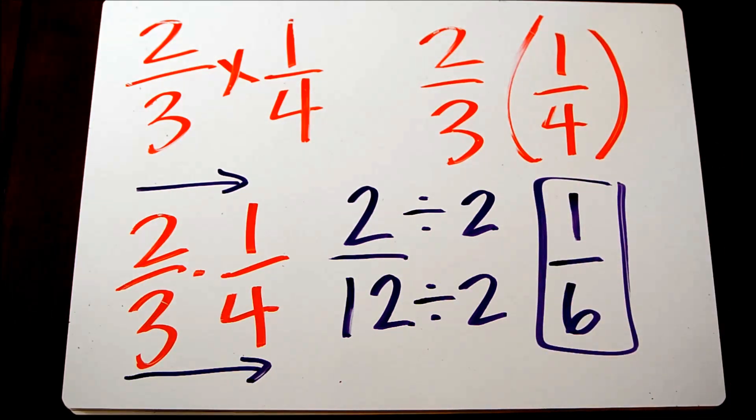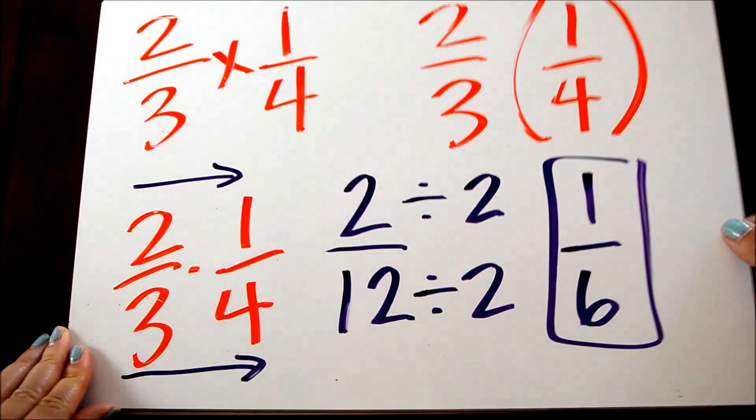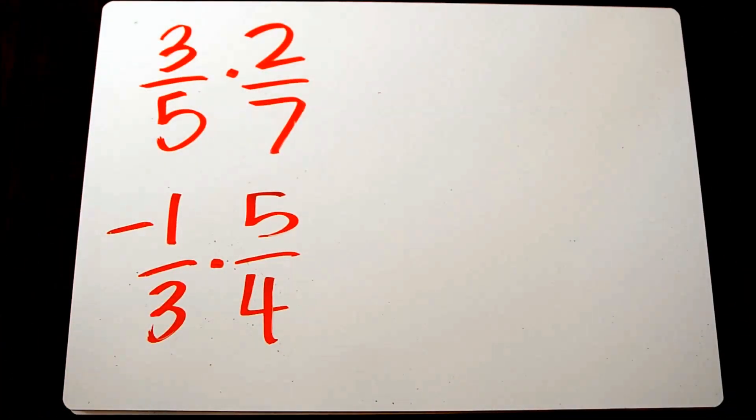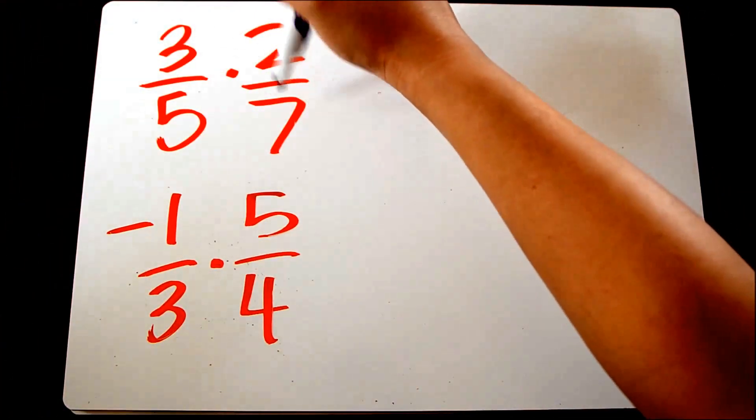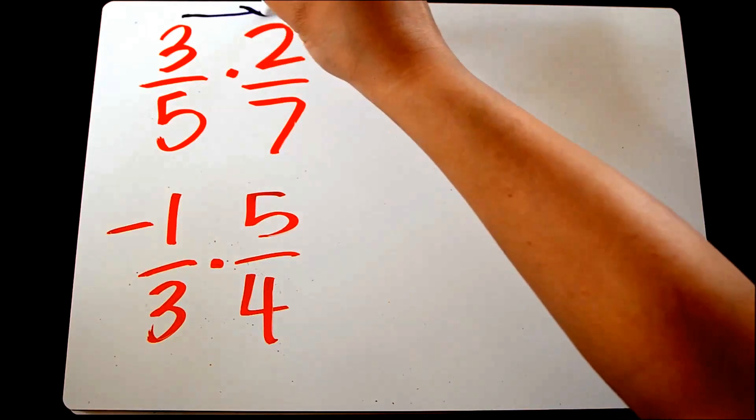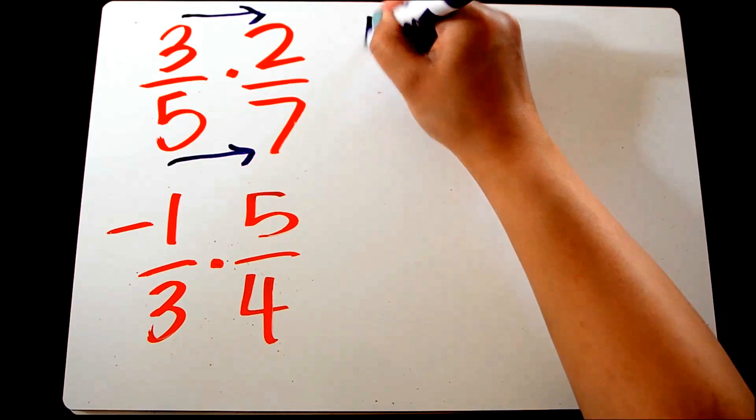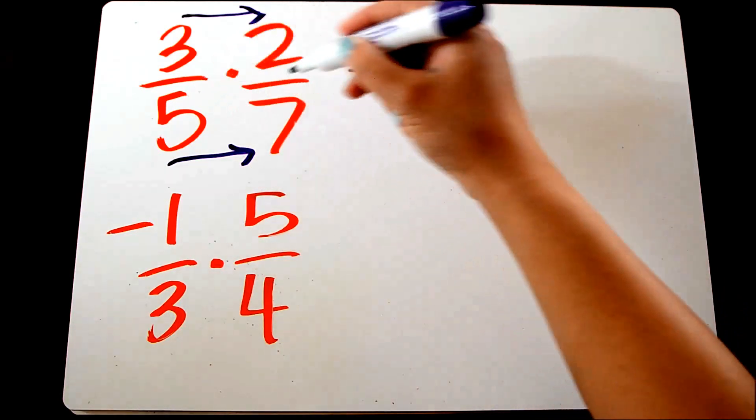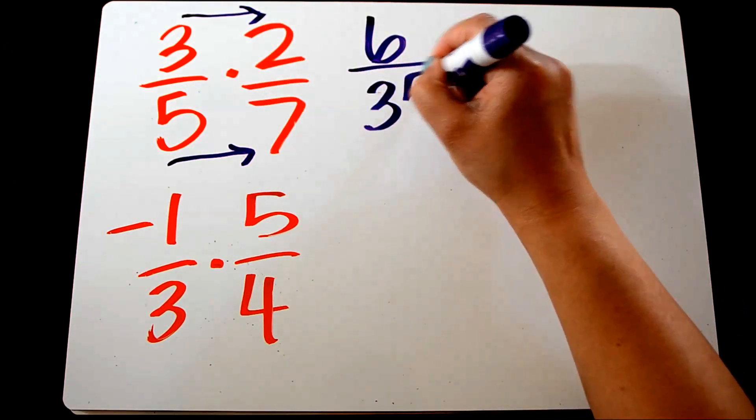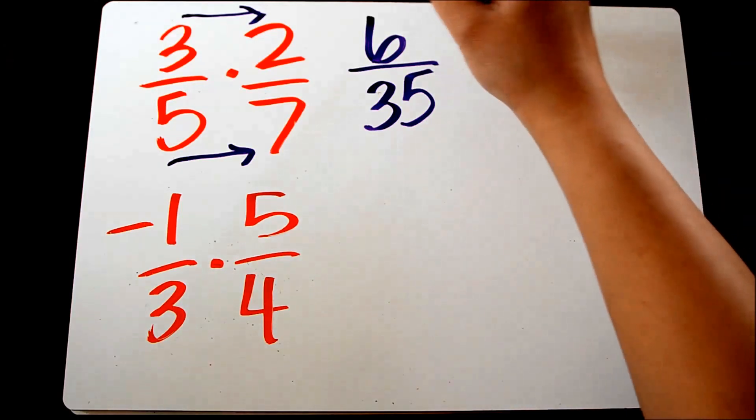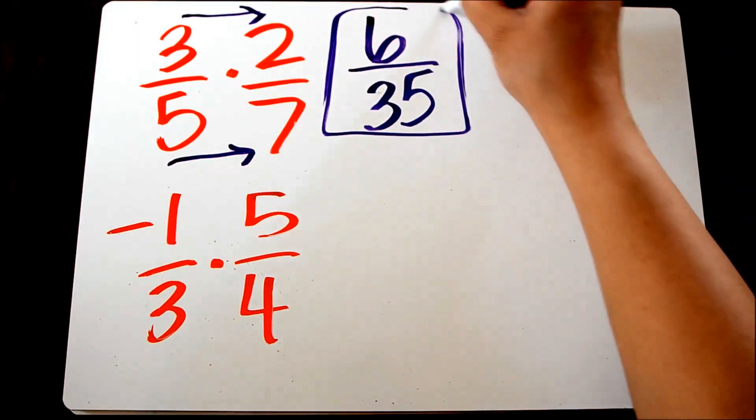Let's take a look at a few more examples. Here we have 3 fifths times 2 sevenths. Multiply straight across. 3 times 2 is 6. 5 times 7 is 35. And this cannot be reduced any further, so that is our simplified fraction.